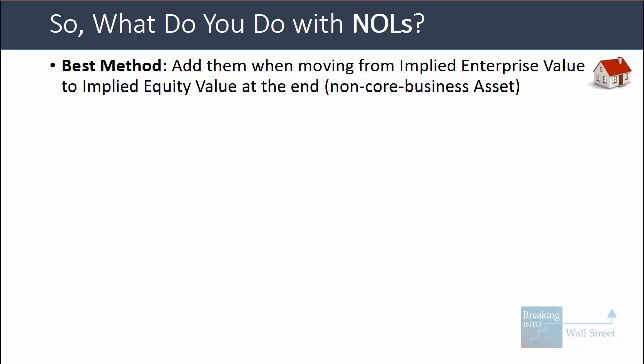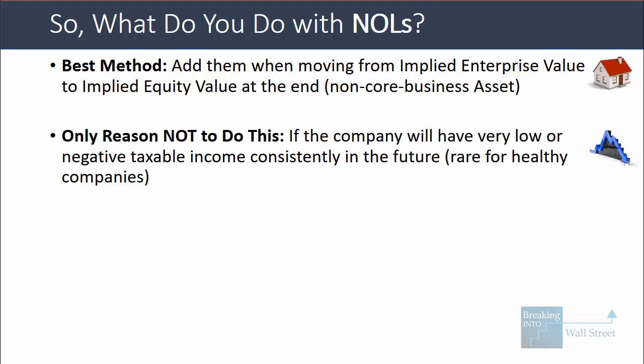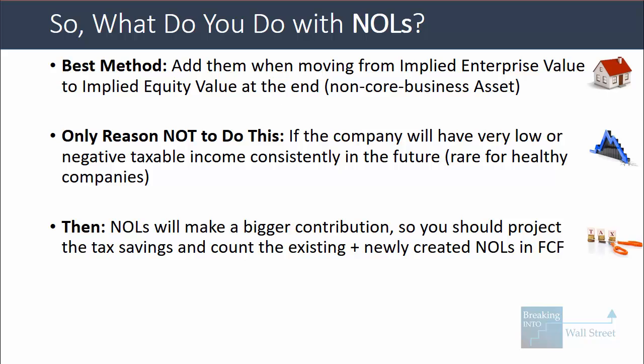In short, the best way to factor in NOLs is to add them when you move from implied enterprise value to implied equity value at the end — counting NOLs as a non-core business asset and adding them just like cash and investments. The only reason not to do it this way is if the company has consistently low or negative taxable income in the future, which is pretty rare for healthy companies. In that case, you should project the tax savings and count the existing and newly created NOLs in the free cash flow.